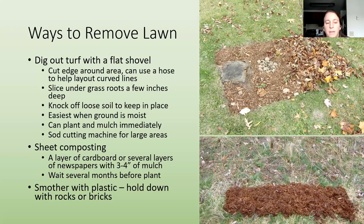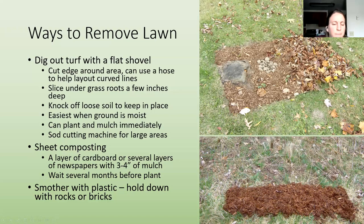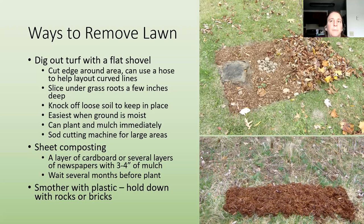With sheet composting, you can't plant immediately. It also increases the height of the ground a little bit. Another organic method is to smother the area with plastic — put it down for several months and hold it down with rocks or brick. It's not my preferred method since plastic is made with fossil fuels, but it is better than using chemicals, especially for a larger area.